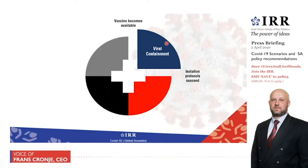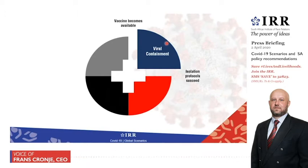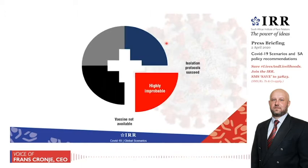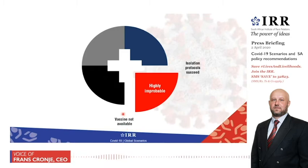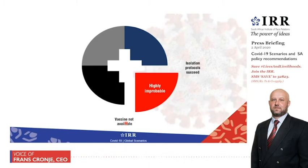We will avoid the worst of the economic and healthcare risks that we face now, and we will emerge in 18 to 24 months' time to pick up the pieces and to begin to rebuild. The second scenario suggested by the axes we've written off — it's internally contradictory. It suggests that isolation will succeed while a vaccine will never become available. We believe the vaccine will be available and we don't think isolation could succeed in perpetuity. So we write this one off; we have three to work with.